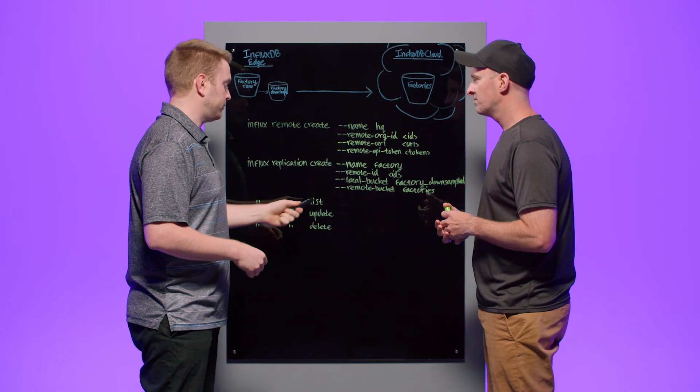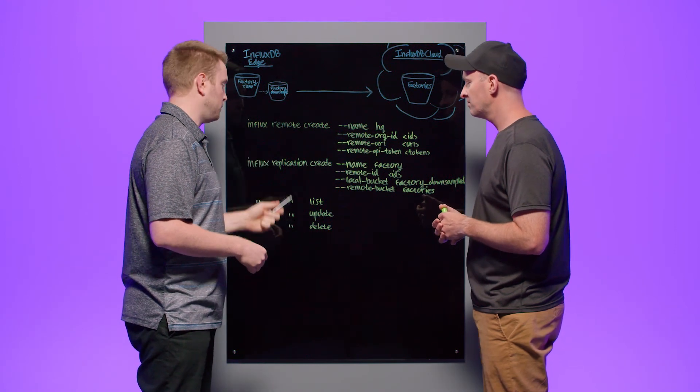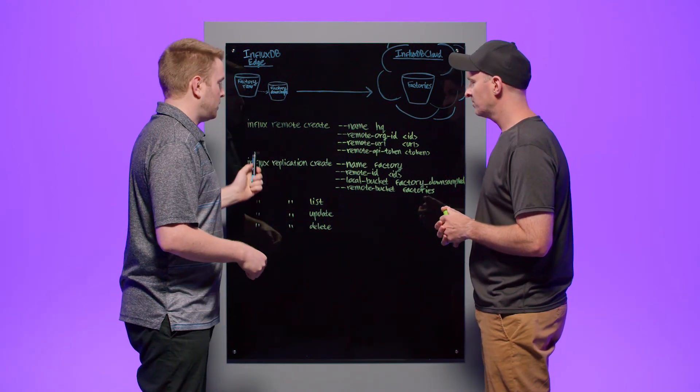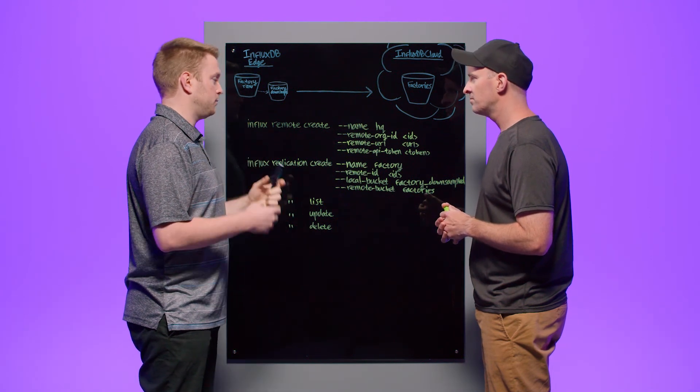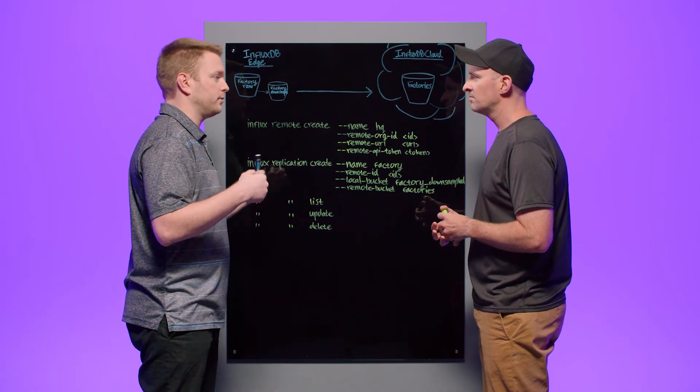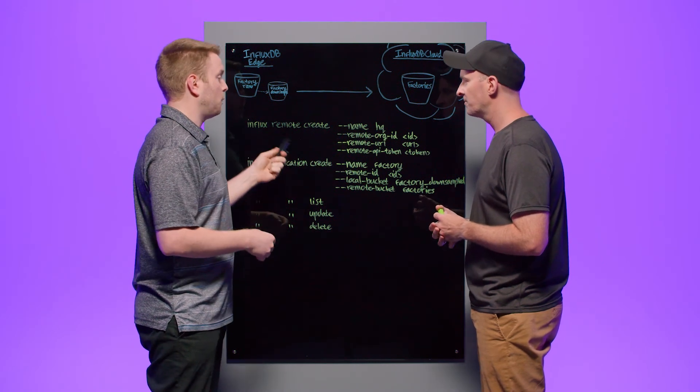And so once I've got a replication created, what options do I have to manage those? Yeah. So like with any resource in InfluxDB, we have the create, list, update, and delete commands. So same with remote and replications. When I've created these resources, I can list them, which gives me a list of them obviously, but then also a bunch of metadata fields that can tell me about them.